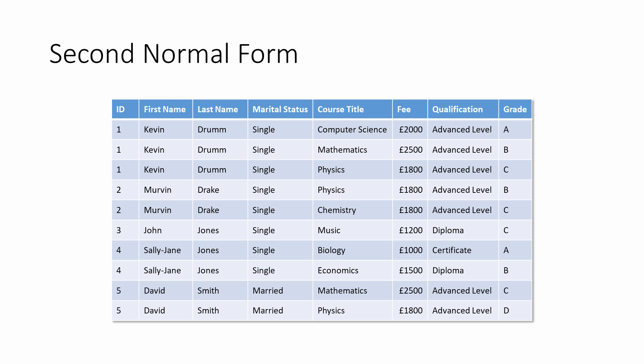A much simpler way of saying that is a table should only contain data about one type of thing. Or to be slightly more technical, a table should only contain data about one type of entity. If it's about more than one type of entity, the data need to be split into separate tables.